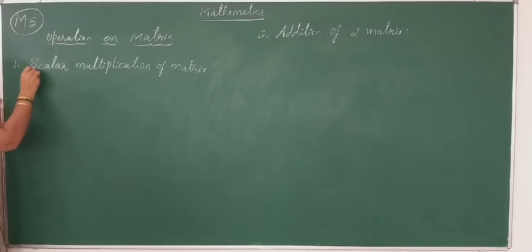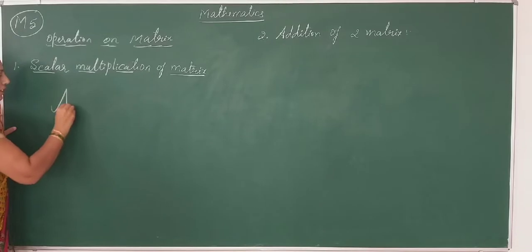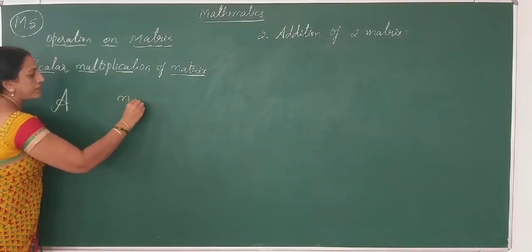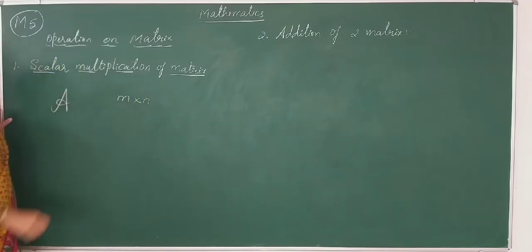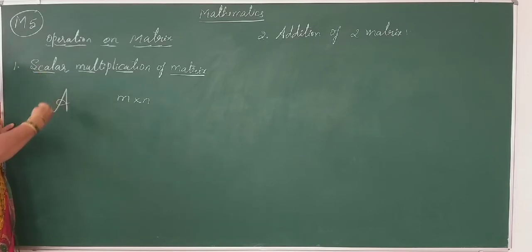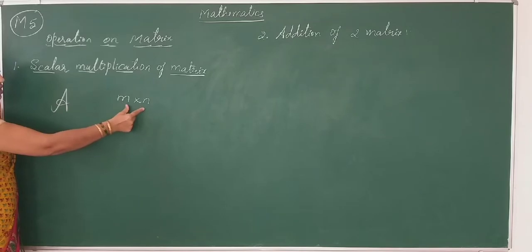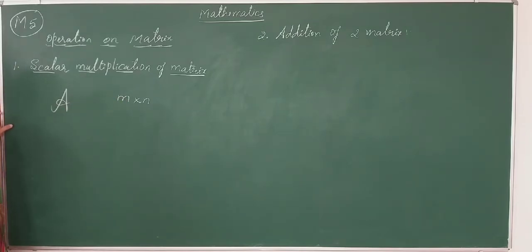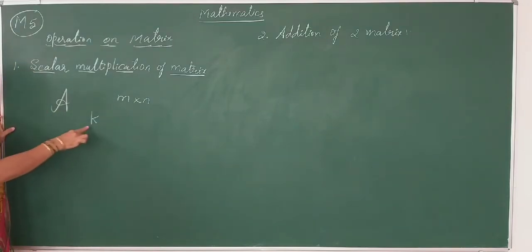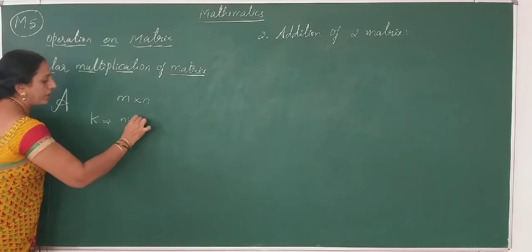The first operation is scalar multiplication of a matrix. A is any matrix. The order of the matrix is m cross n. It is not only for a square matrix — it can be square, diagonal, or identity. A is any matrix. K is a scalar number.